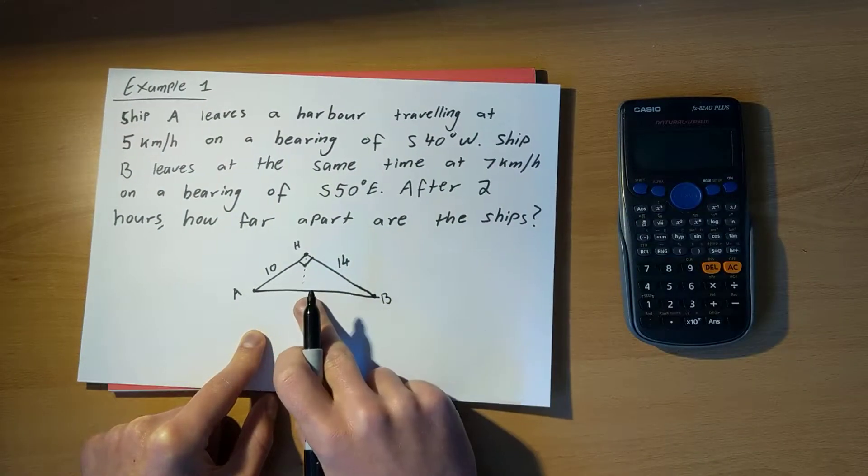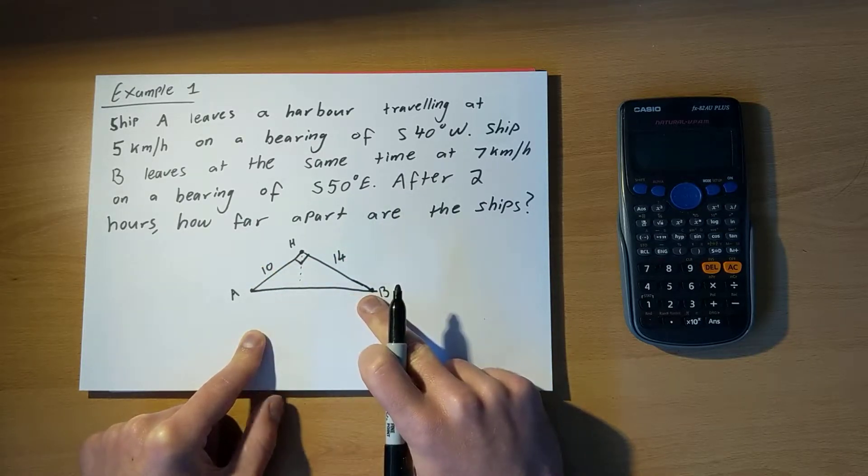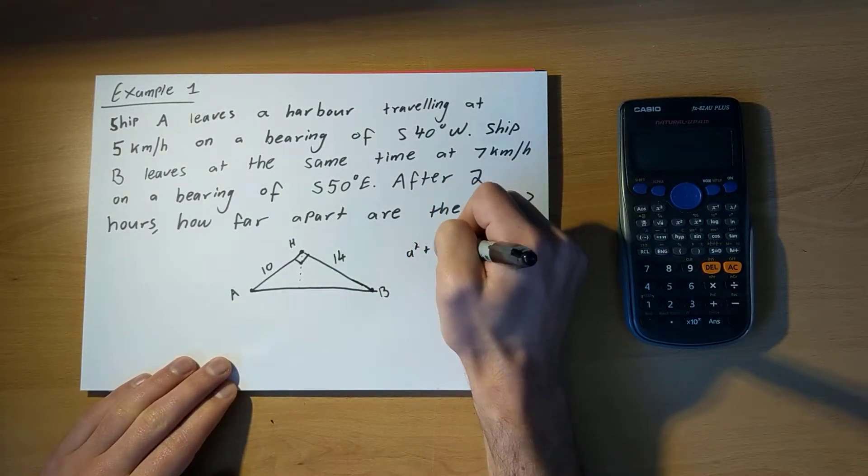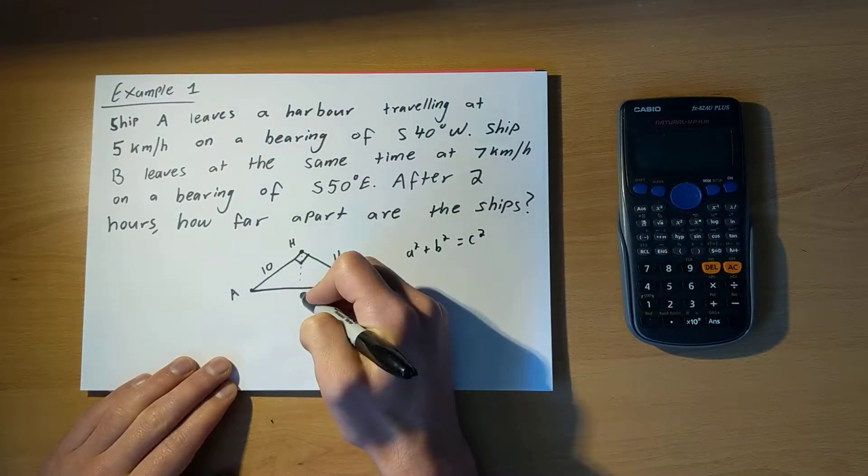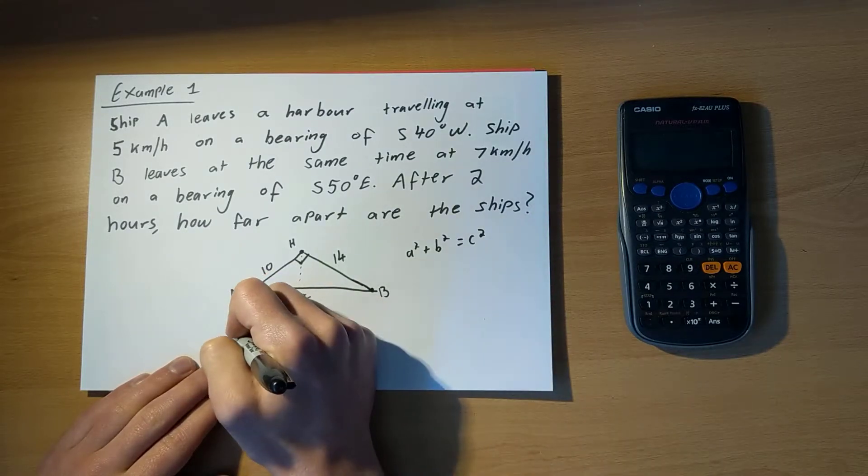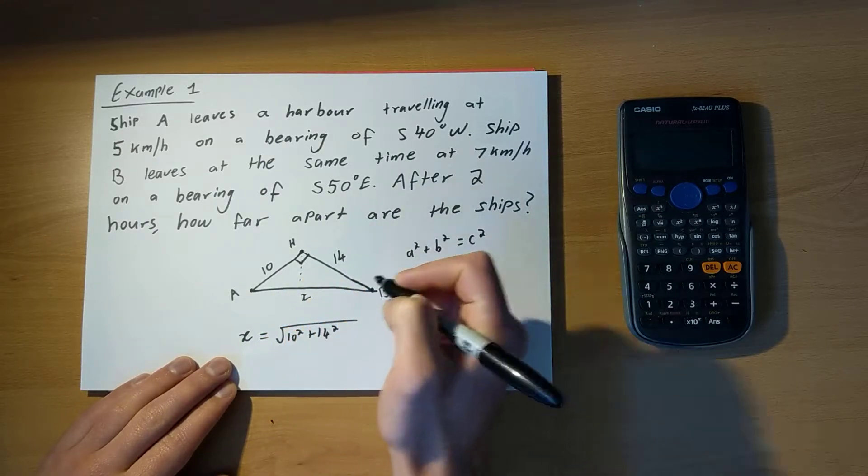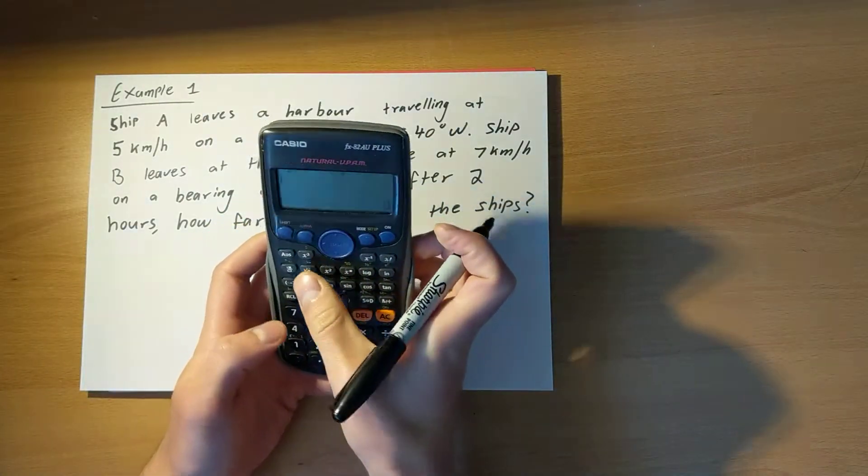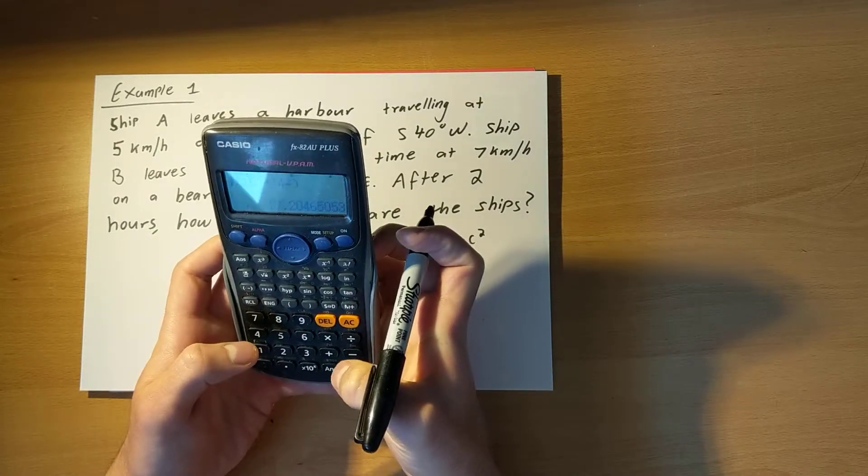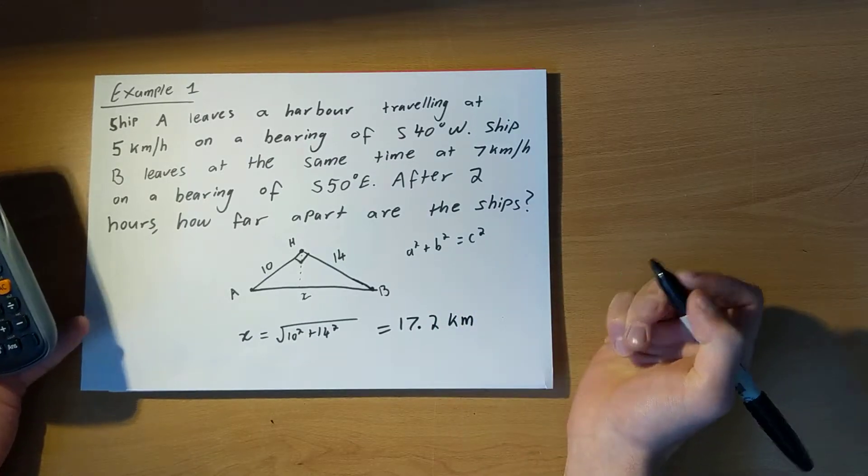Now, this is pretty straightforward because I've got a right angle triangle. I know two of the side lengths and I'm looking for the third side. So I'm just going to use good old Pythagoras where A squared plus B squared equals C squared. So if I call this X, the thing that I don't know, that is my hypotenuse or my C. So I get that X equals the square root of 10 squared plus 14 squared. And I'm going to put that into my calculator. The square root of 10 squared plus 14 squared equals 17.2. And that is in kilometres.